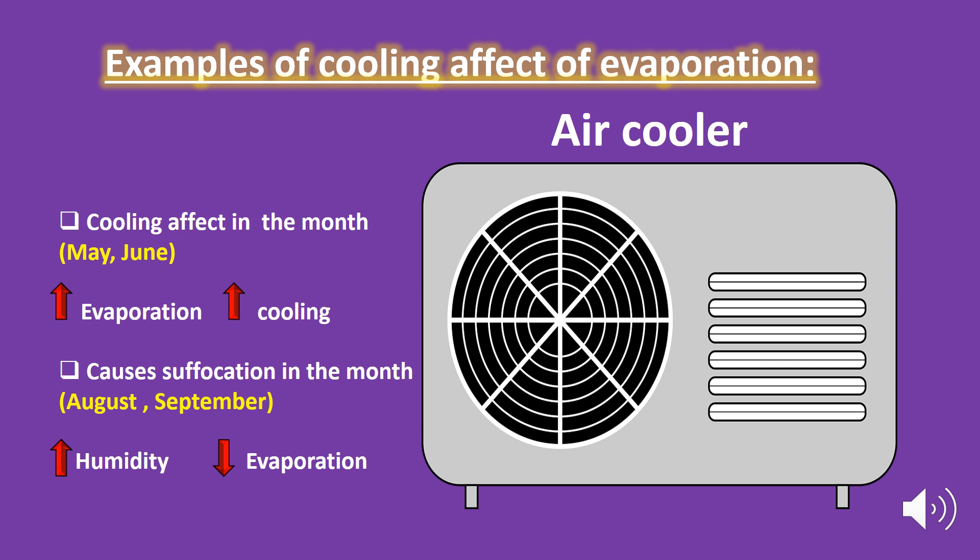Another example is the air cooler, which gives a cold effect in the months of May and June but produces suffocation in the months of August and September. This is because the atmosphere has a specific water vapor holding capacity. During May and June, the normal process of evaporation takes place smoothly and causes the cooling effect. But during August and September, the humidity in the atmosphere increases, which decreases the rate of evaporation.